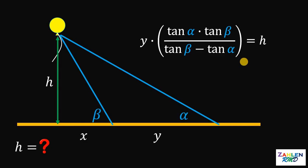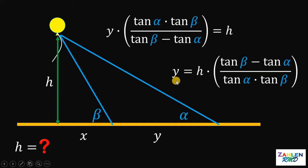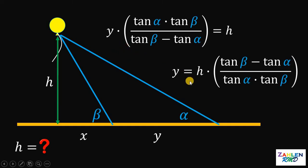Another question: what if the given is the height h, and what we need to find is the distance y between the two points? Rearranging the equation gives y = h × [tan(β) − tan(α)] / [tan(α) × tan(β)]. If you have this kind of scenario, you now have these generalizations to solve for both h and y. And as always, we are done.